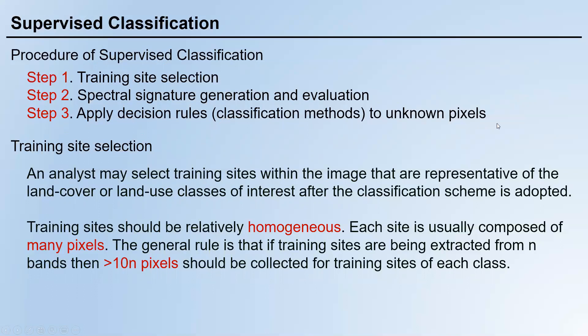Now specifically for supervised classification, the steps are: first, training site selection; second, spectral signature generation and evaluation; third, apply decision rules or classification methods to unknown pixels. An analyst selects training sites within the image that are representative of the land cover or land use classes of interest after the classification scheme is adopted — for example, four classes: water, vegetation, bare soil, and urban.